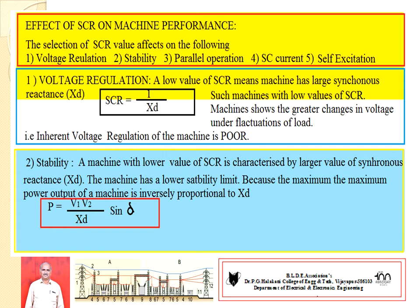XD should be small — this occurs when SCR is high. At a lower value of SCR, higher reactance is developed, and higher reactance causes poor regulation of the machine.